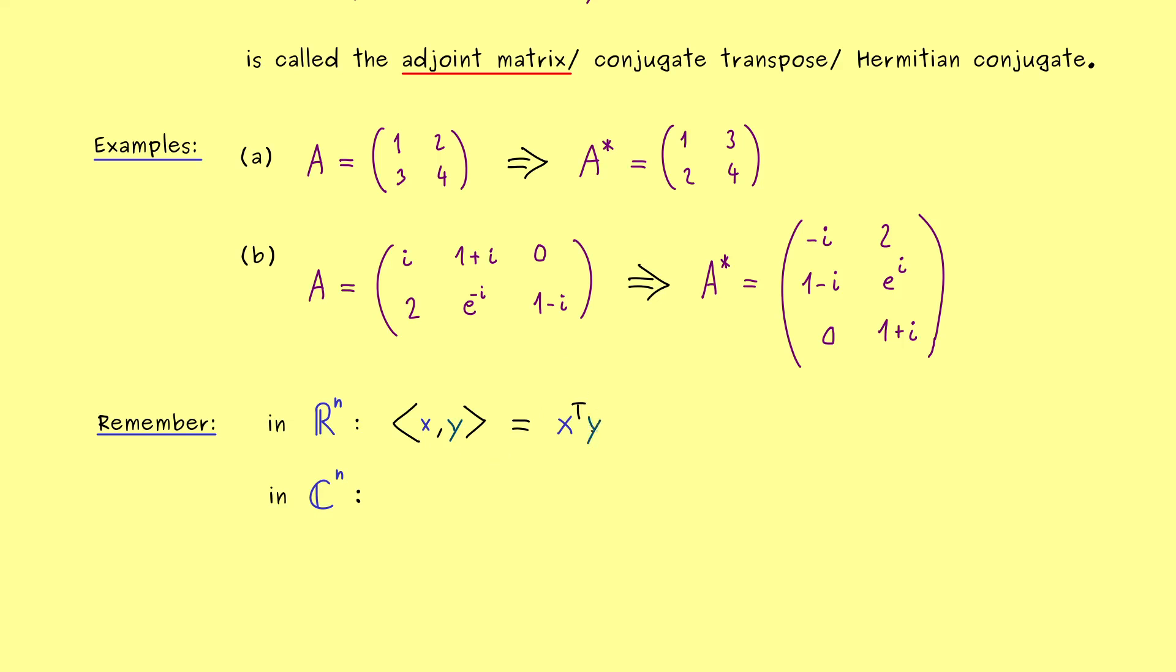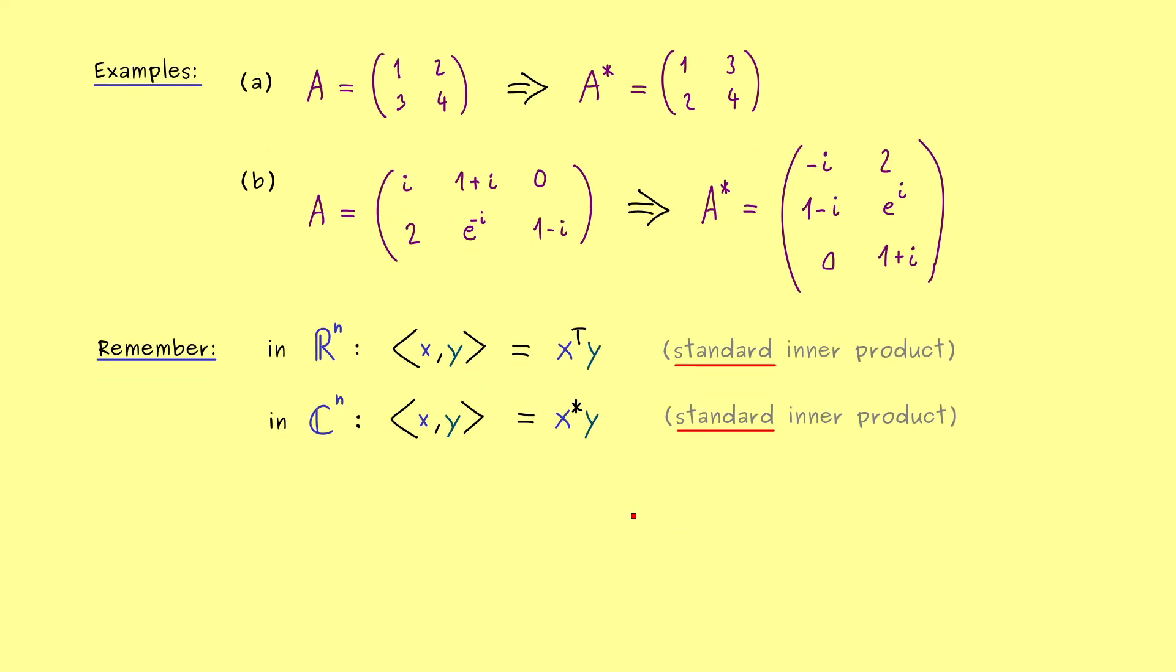So now we know, the standard inner product in R^n can be written as x^T y. So using the transpose on the column vector x makes it to a row vector, and we have the matrix vector multiplication here. And the result is a 1x1 matrix, which we interpret as a real number. And now indeed, the same we can do with the complex case, where we use the adjoint instead of the transpose. This means with our new notations, the standard inner product in C^n is given as x star y. And again, you can see it as a matrix product, where the result is a complex number. So I would say, this makes your life easier to remember the standard inner product in R^n and in C^n. However, please don't forget, this is the standard inner product, so there are also other possibilities to define so-called inner products.